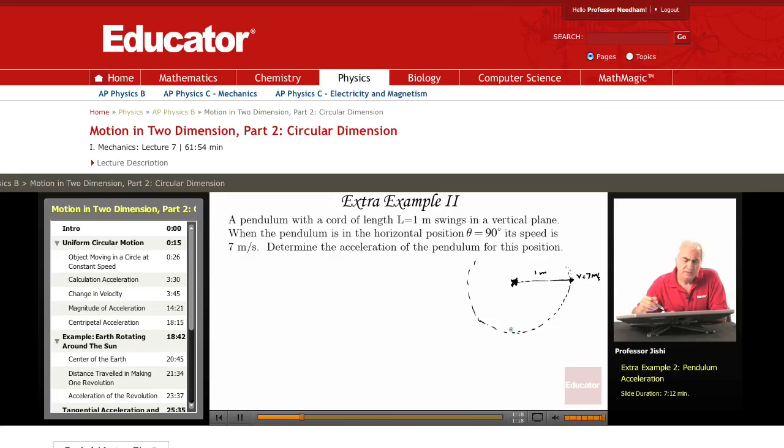Since this is moving in a circular path, there's always a centripetal acceleration which is V squared over R. This is an acceleration towards the center. So I have centripetal acceleration, A centripetal, which is V squared over R.